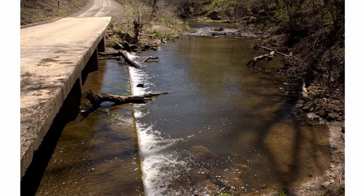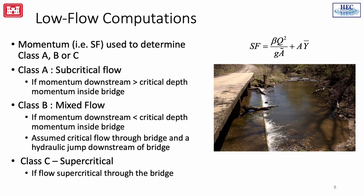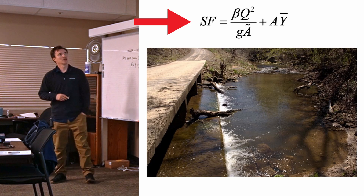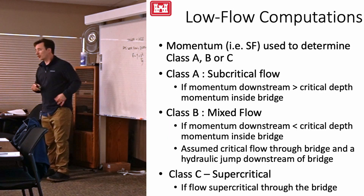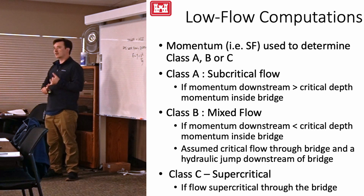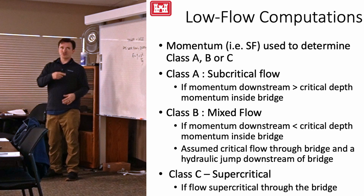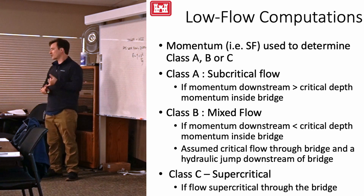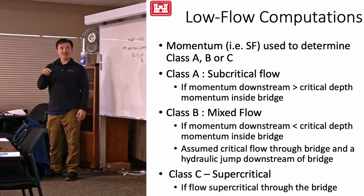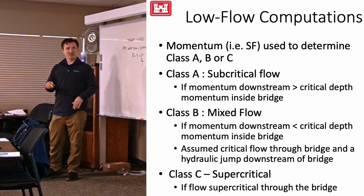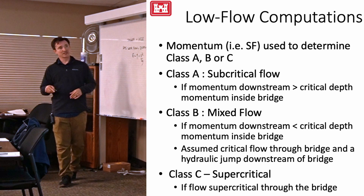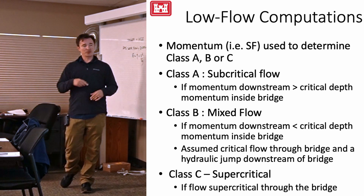This is an example of a low flow bridge functioning as a weir. The flow type for low flow is determined using momentum — specifically the specific force. Class A is subcritical flow, which occurs when the momentum downstream is larger than the momentum inside the bridge associated with critical depth. Mixed flow — Class B — occurs when the momentum downstream is less than the momentum inside the bridge associated with critical depth, so the flow is assumed to go through critical depth inside the bridge.